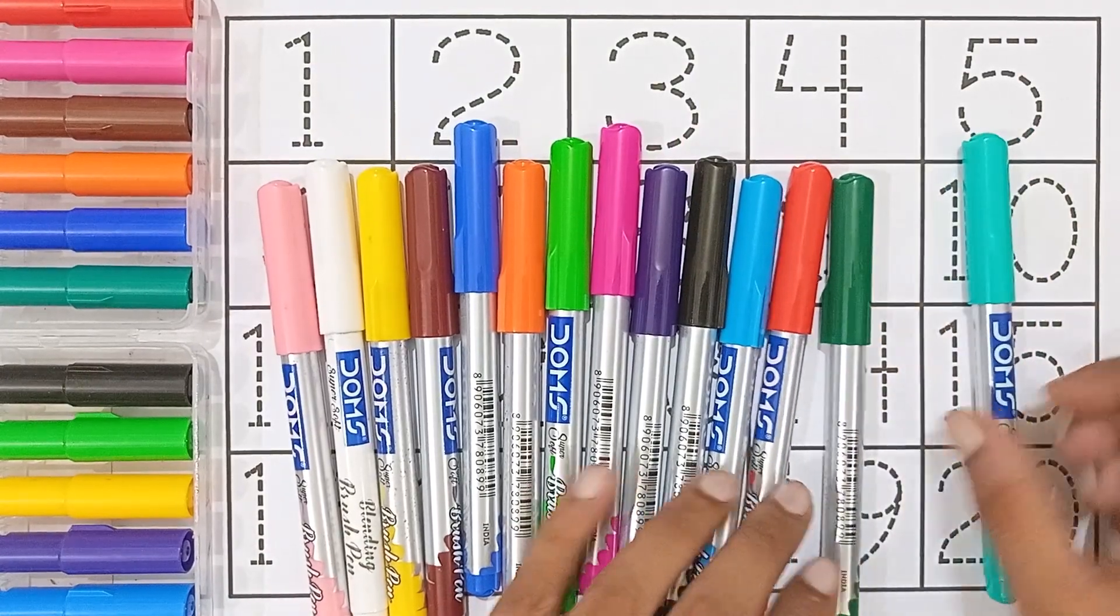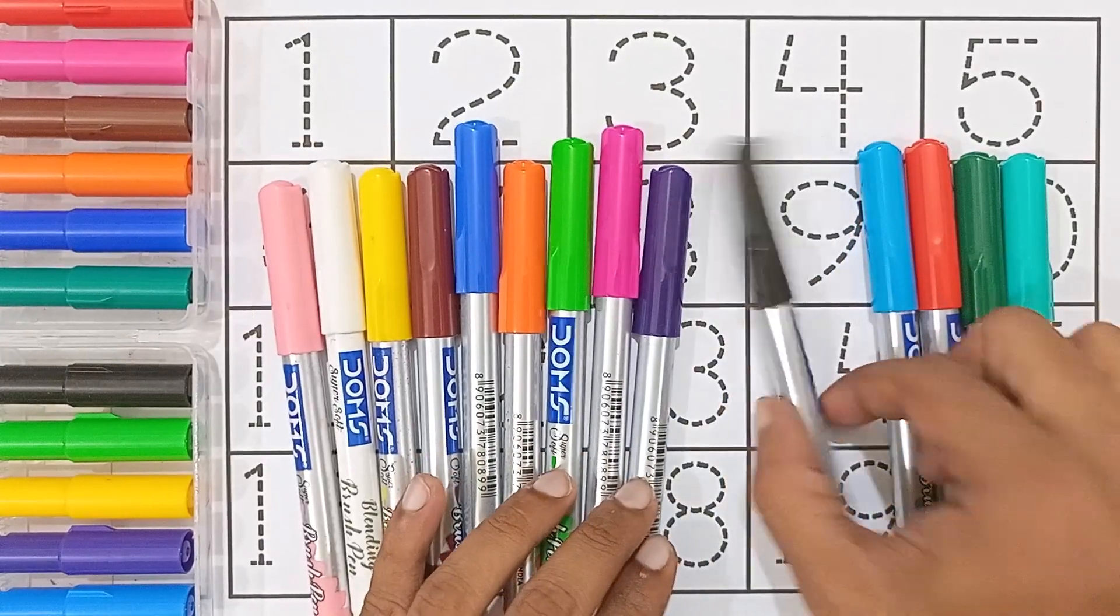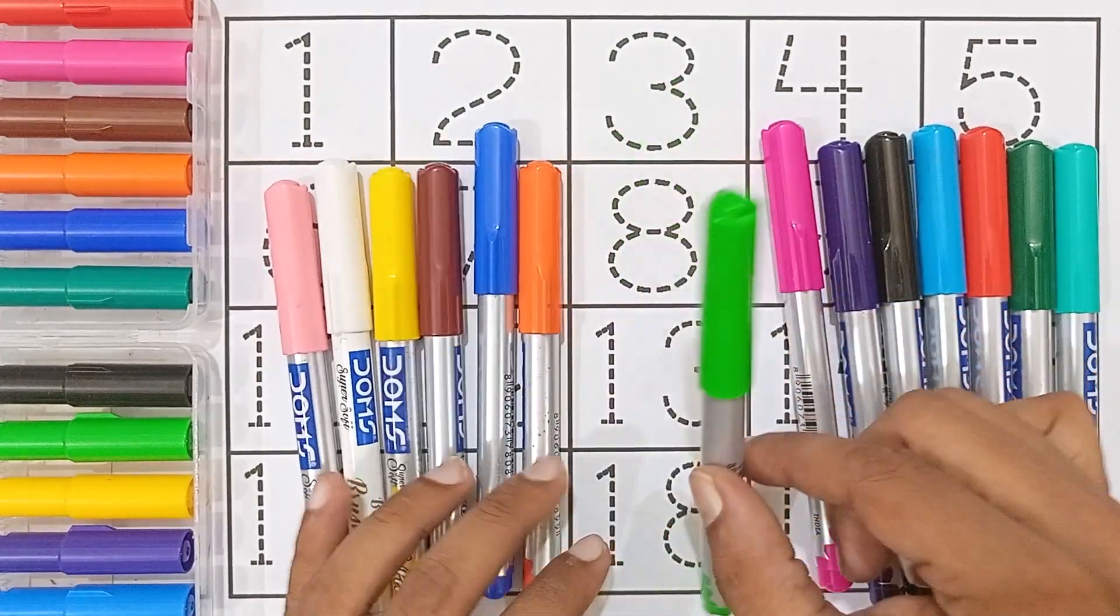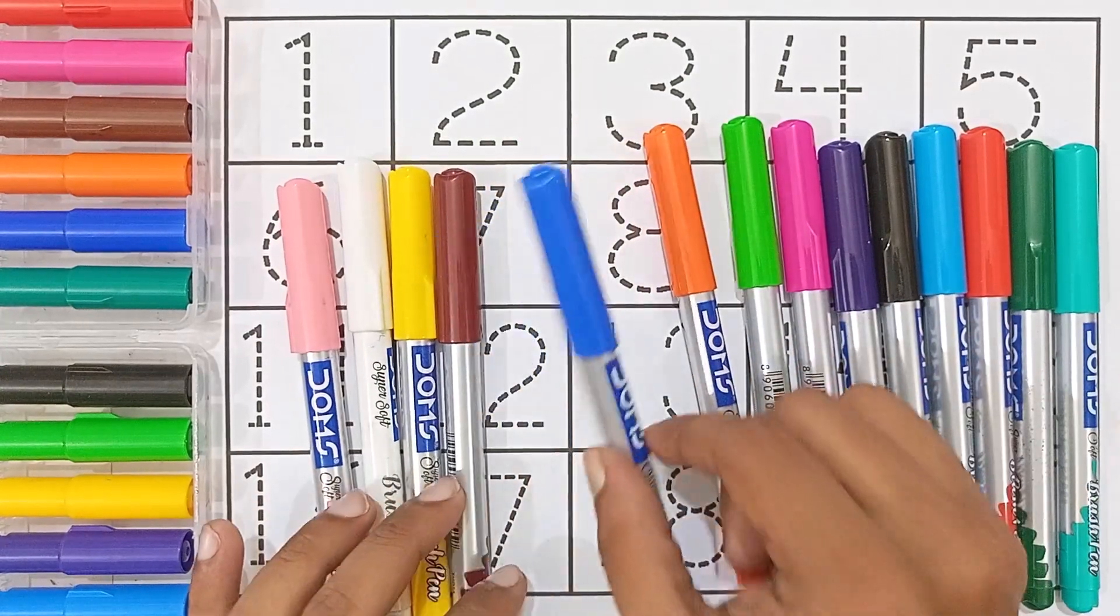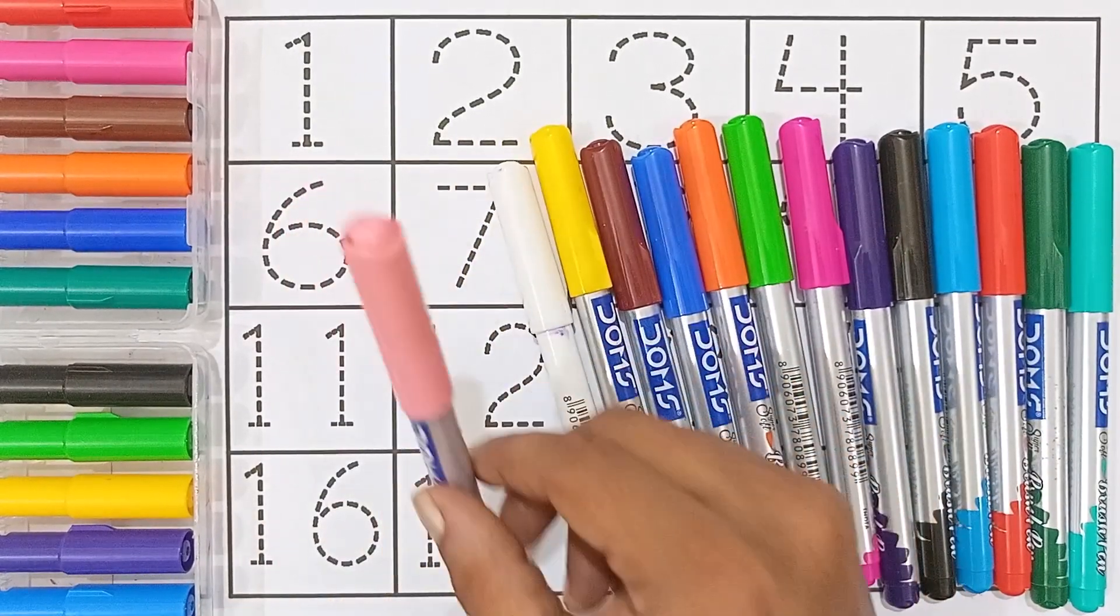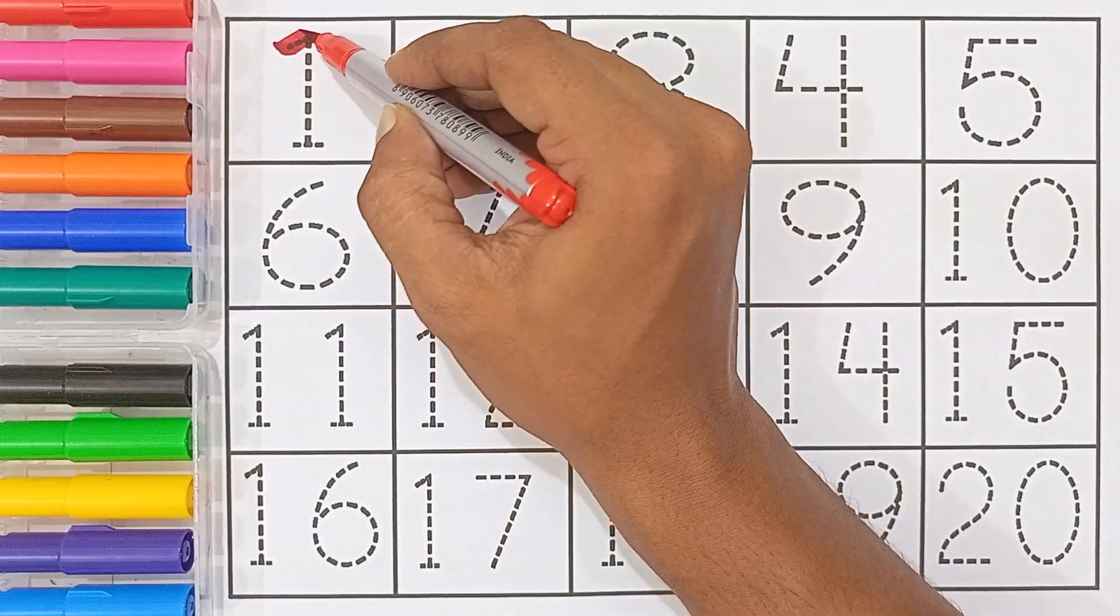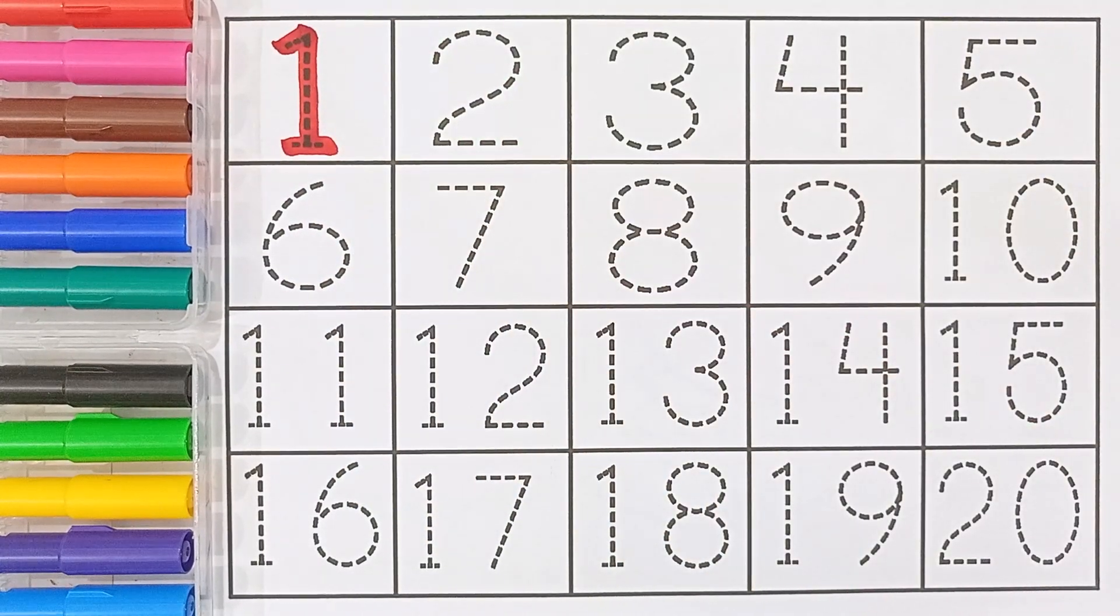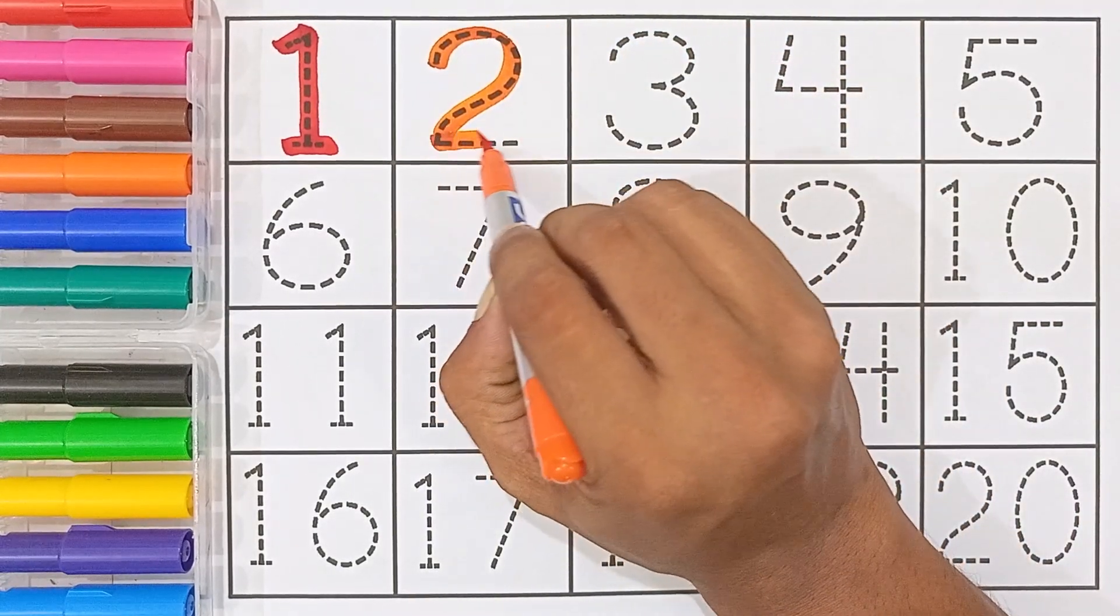Green color, red color, sky blue color, black color, violet color, magenta color, light green color, orange color, blue color, brown color, yellow color, white color, light pink color. One, red color. One. Two, orange color. Two.